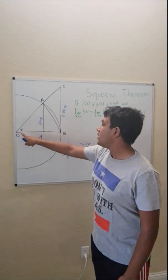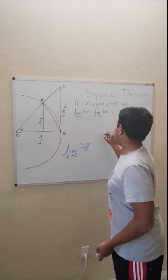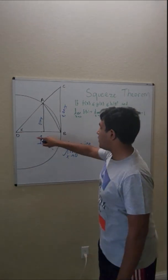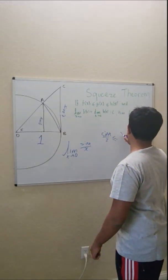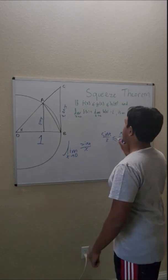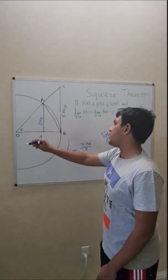So the area of this triangle must be equal to sine of x over 2, which must be less than or equal to the area of this wedge, which is equal to x over 2 (pi r squared, r squared is equal to 1), which is less than or equal to the area of this triangle, which is equal to tangent of x over 2.